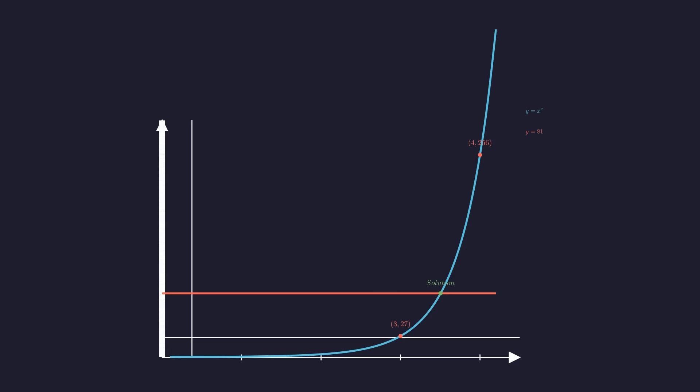The function's behavior, approaching 1 as x approaches 0, reaching a minimum at 1 over e, and then strictly increasing, explains why a single positive solution exists for a target value of 81.